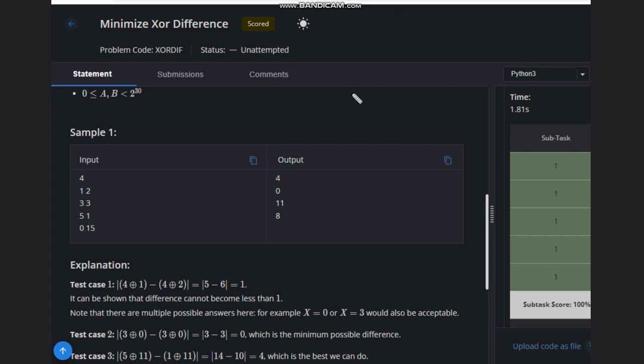For solving this problem, what you can do is: you have A and B, then you can initialize X with zero, and you need to calculate this condition which is given - the absolute value of A XOR X minus B XOR X.